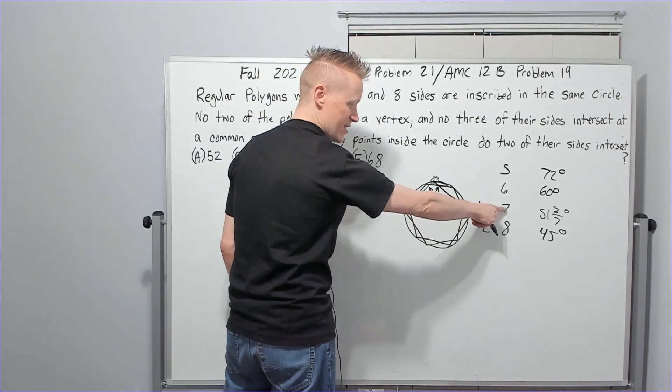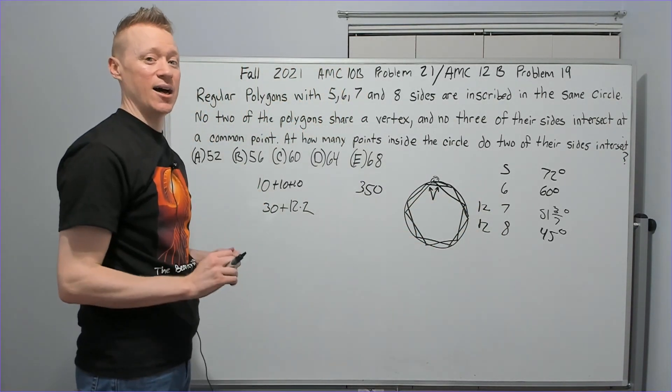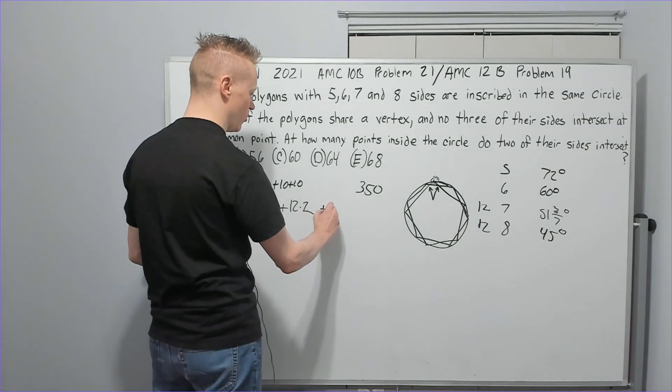Lastly, the 7-sided figure, the septagon, will hit the octagon 14 times because it will cross over seven of its sides, and you're going to add 14.